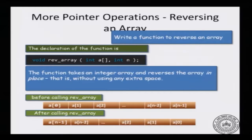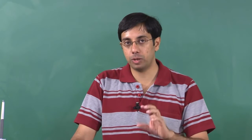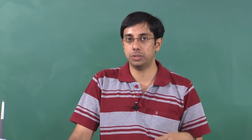The array before calling reverse_array will look like a[0] up to a[n-1]. After calling reverse_array, it should look like a[n-1], a[n-2], and so on down to a[0]. In doing that, we should not use an extra array. Let us look at a couple of concrete examples to see how to do it by hand, and then we will try to code that algorithm.